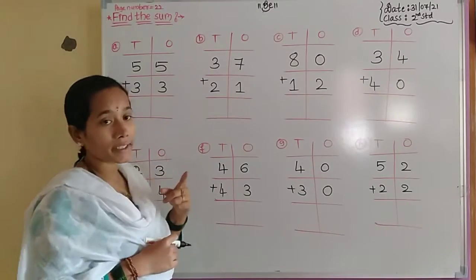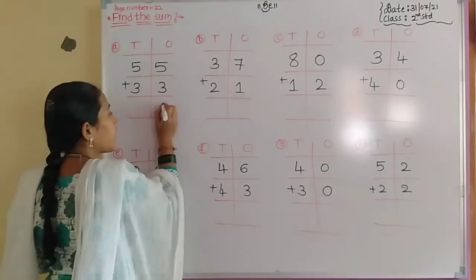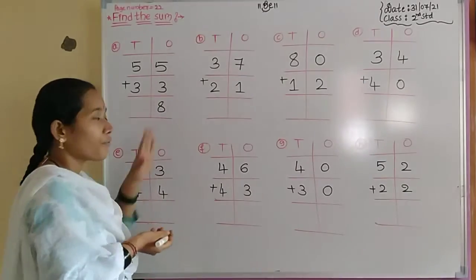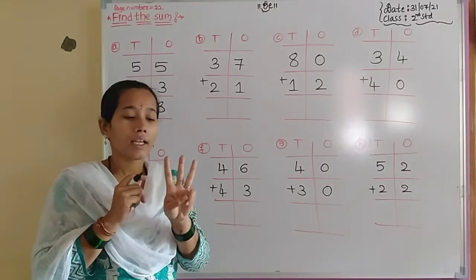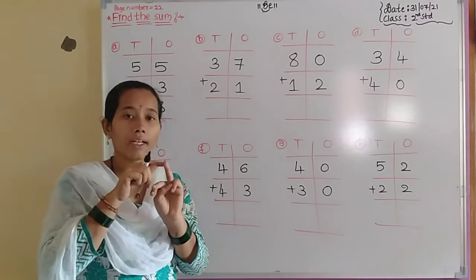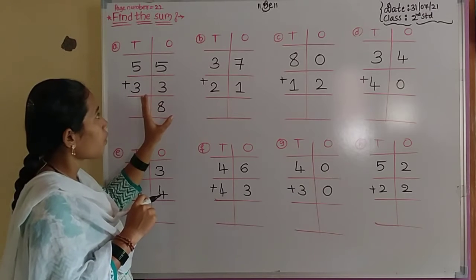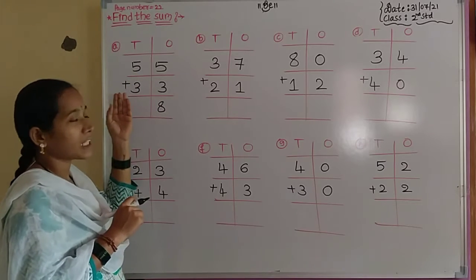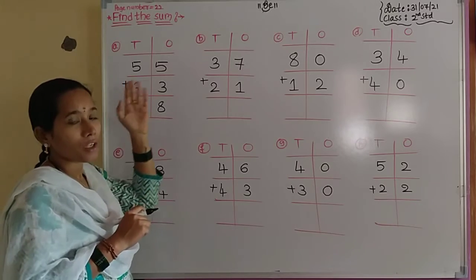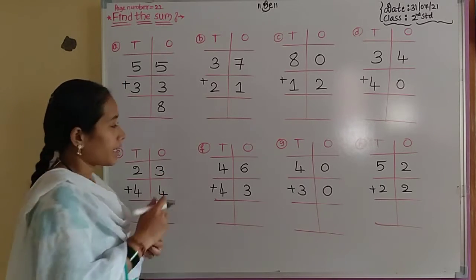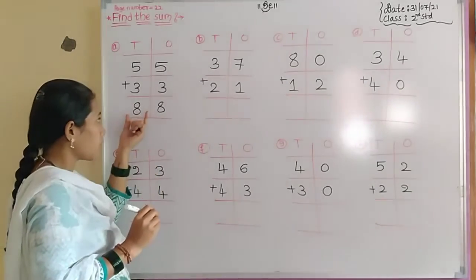Here we have to solve mentally. 5 plus 3 is equal to 8. Keep 5 in your mind, 3 on your fingers, then count forward: 6, 7, 8. Write 8 in the ones place. Then move to the tens placement: 5 plus 3 is equal to 8 again. So the sum is 88.